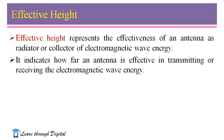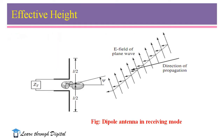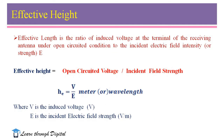Now, how to calculate effective height? Let us consider one example. I take a dipole antenna of length L equal to lambda by 2, and let us assume the electric field intensity is incident on the antenna. Voltage is induced across the open circuit terminals of the antenna because of the incident electric field intensity. From this, we can write the effective height of an antenna. Effective height or effective length is the ratio of induced voltage at the terminal of the receiving antenna under open circuit conditions to the incident electric field intensity.